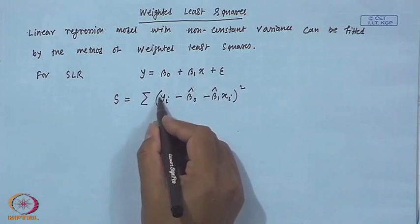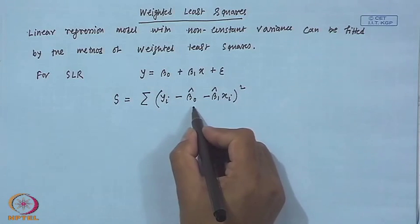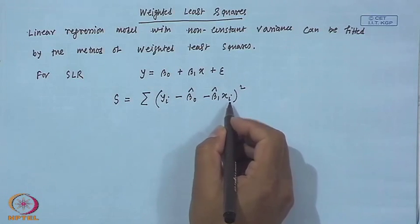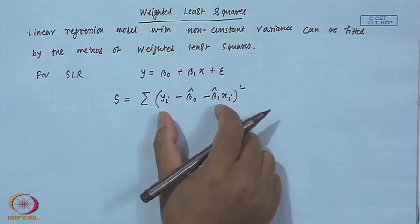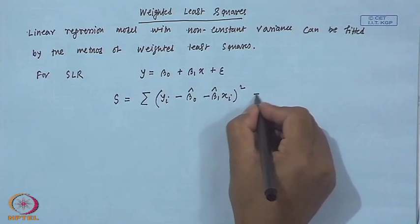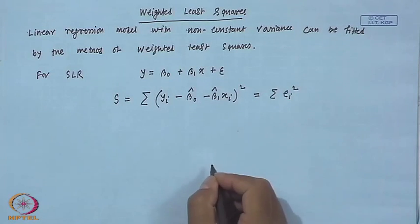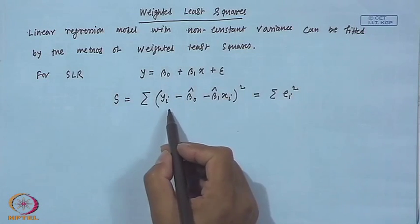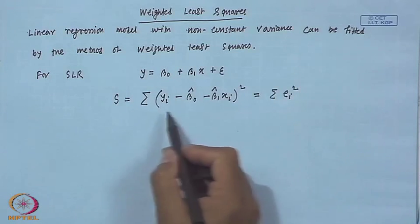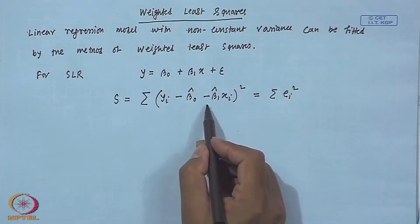Here y_i is the observed response, β₀ + β₁x_i is the fitted response, and the difference is the residual — this is nothing but the i-th residual e_i squared. In the ordinary least square technique, we minimize the difference between the original response value and the estimated response value.